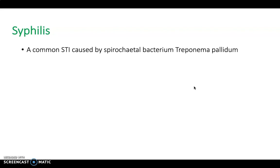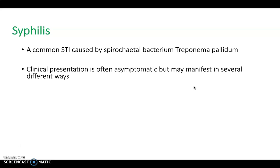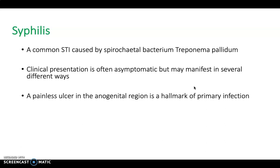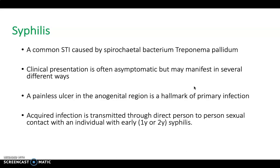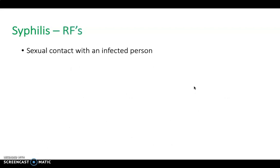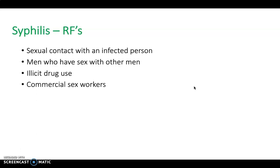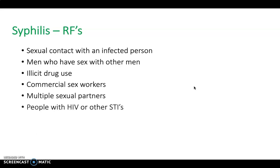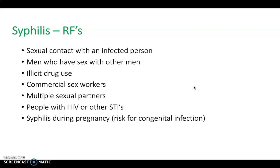Syphilis is a common STI caused by a spirochetal bacteria called Treponema pallidum. Clinical presentation is often asymptomatic, but may manifest in several ways — a painless ulcer in the anogenital region is a hallmark of primary infection. Acquired infection is transmitted through direct person-to-person sexual contact with an individual with early primary or secondary syphilis, and transmission from mother to fetus during pregnancy can cause congenital infection. Risk factors include sexual contact with an infected person, men who have sex with men, illicit drug use, commercial sex workers, multiple sexual partners, HIV or other STIs, and syphilis during pregnancy.